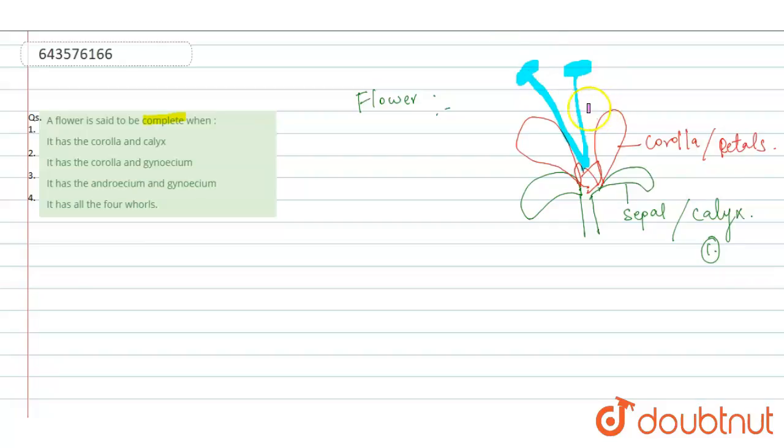And inside this stamen, female reproductive part is present. Female part of flower is present known as pistil or gynosium.